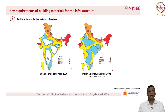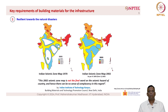What you see on the screen is the seismic map of India in 1970 on the left hand side and the seismic map of India in 2002 on the right hand side. There are large white patches belonging to zone 1, with very low seismic intensity, while the northeastern states and some parts of Kashmir have zone 5 in red. After 30 years, the 2002 map shows zone 1 has been completely eradicated, starting now from zone 2 in blue up to zone 5. The code writers noted that this 2002 seismic zone map is not the final word on seismic hazard of the country, and hence there can be no sense of complacency.